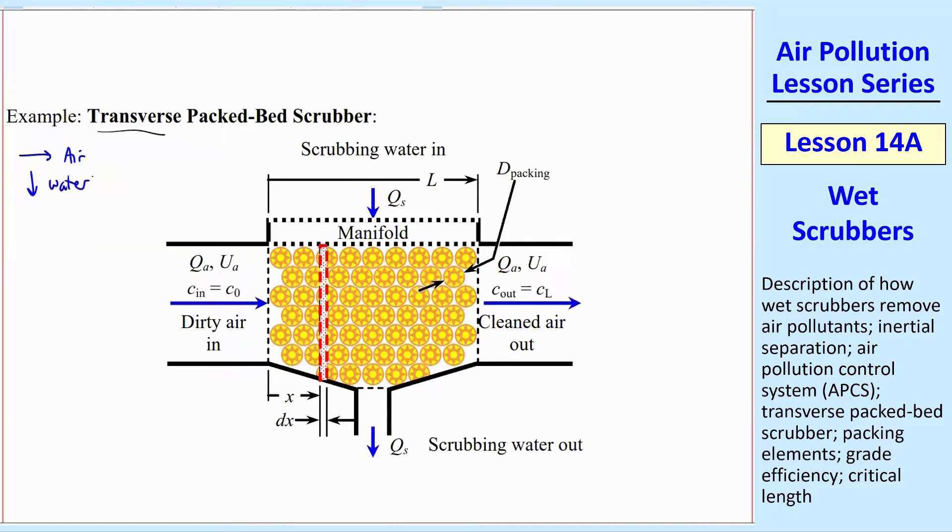It just has a perforated plate up here, and the water comes in and dribbles down onto these elements called packing elements. The air comes in from the left, the dirty air, and then it goes through this tortuous route and comes out the other end more clean.